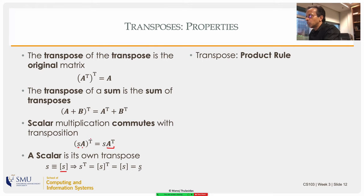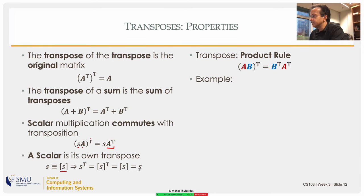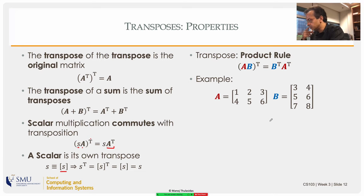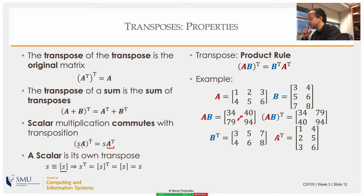There is an important product rule of transposes: (AB) transpose equals B transpose times A transpose. The transpose of a product is the product of the transposes in reverse order. This is critical and is used in many places. For example, A is a 2×3 matrix and B is a 3×2 matrix — they can be multiplied to give a 2×2 matrix. Taking the transpose of AB just swaps those two matrices.